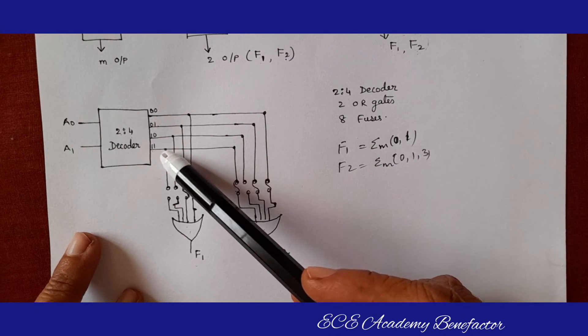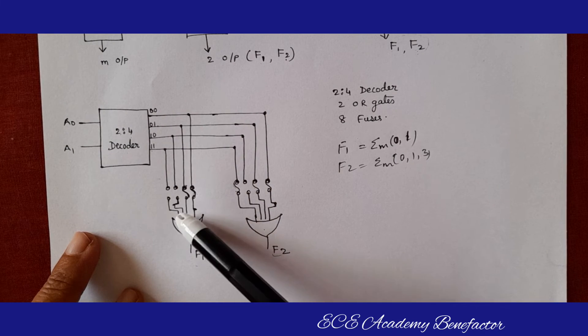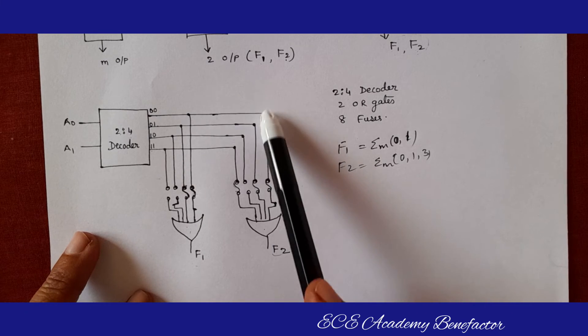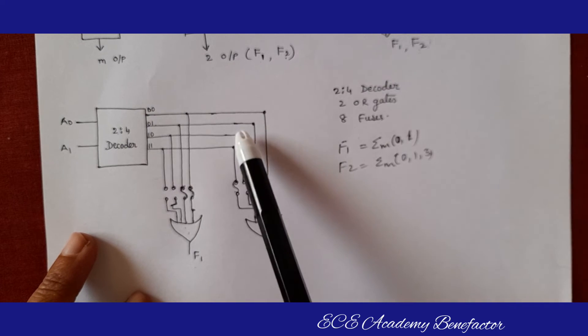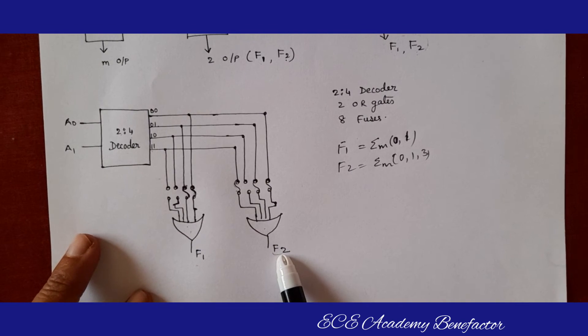From each line we have connected through fuses to this first OR gate, and similarly 0th line, 1 line, 2 and 3 are connected to the second OR gate f2.